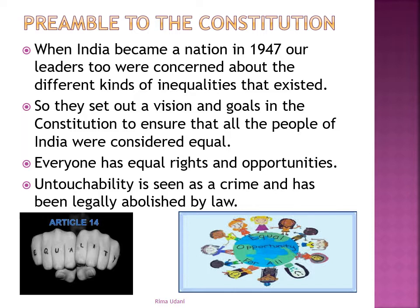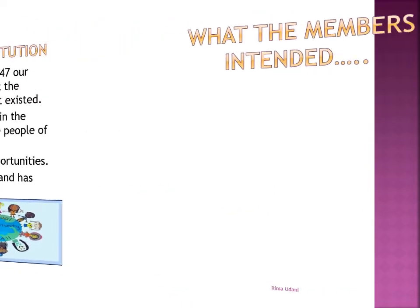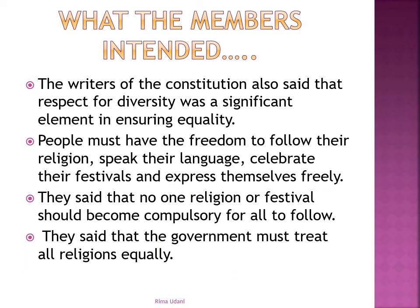Untouchability is seen as a crime and has been legally abolished by law. That means if you discriminate against someone, you could be legally punished. The intention of the members who drafted the Constitution was very simple. They said that respect for diversity was a significant element in ensuring equality. People must have the freedom to follow their religion, speak their language, celebrate their festivals and express themselves freely. They said that no one religion or festival should become compulsory for all to follow, and that the government must treat everybody and all religions equally.